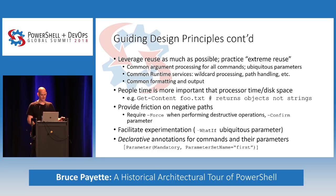Another principle: people time is more important than processor time or disk space. At the time, it was reasonable to have a whole system to yourself, so throwing away resources to make the user faster was a non-issue. That's changed a little bit with multiple VMs on a physical machine, IoT, and resource-constrained environments. Some earlier decisions we made regarding resource consumption are biting us a little as we move into these more constrained spaces, and you can see in PowerShell v6 where we're reducing the footprint.